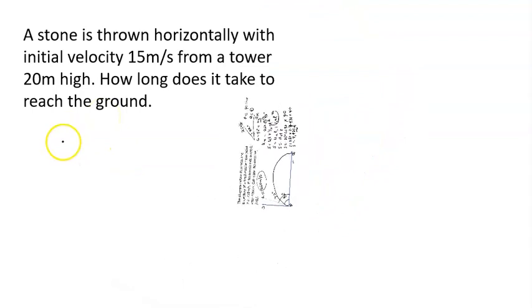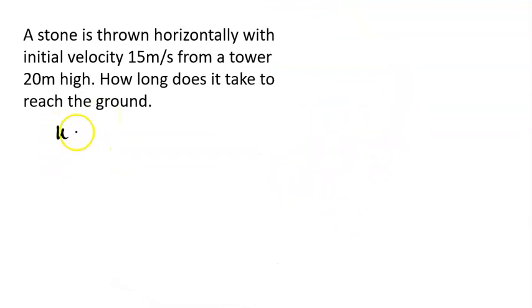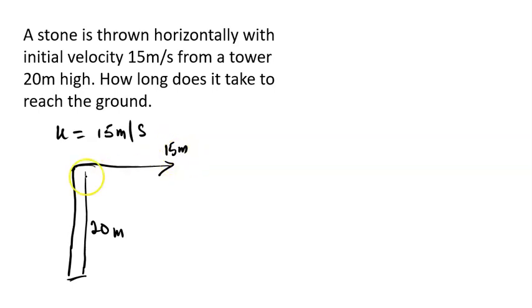Now for the second question, a stone is thrown horizontally with initial velocity u. Our initial velocity in this question is 15 meters per second from a tower. Here is a tower from a height of 20 meters. And the question says it is thrown horizontally. If the stone is thrown horizontally with an initial velocity of 15 meters per second, that means it's thrown this way horizontally and it must now come to the floor this way, to the ground. It hits the ground at this point. How long does it take to reach the ground?